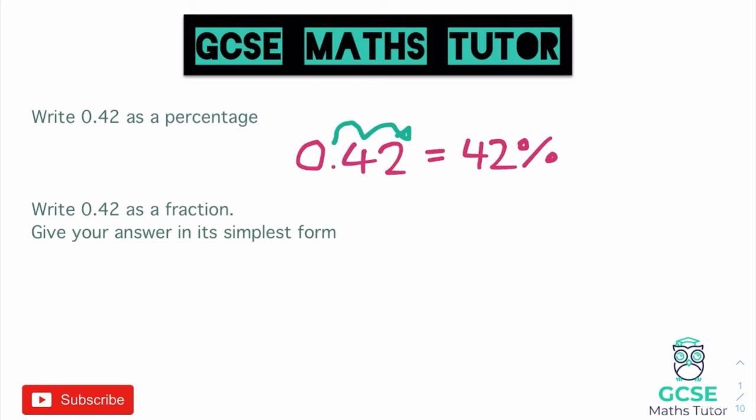And the same would work the other way around — if we wanted to turn a percentage into a decimal we would just divide it by 100, and we'll see that in another part of the video. Now we've turned a decimal into a percentage, let's look at writing 0.42 as a fraction. This is where the word 'percent' helps us again, because percent means per 100, so it's easier to write it as a percentage first.